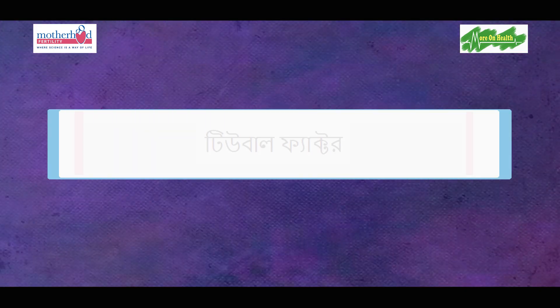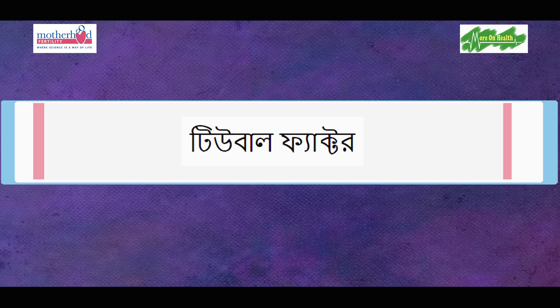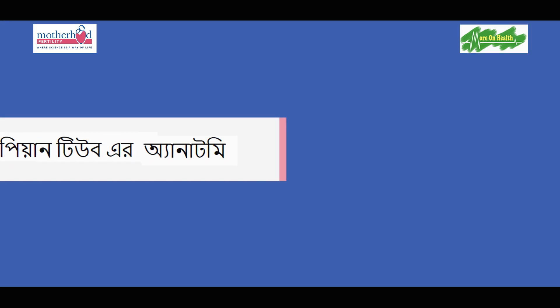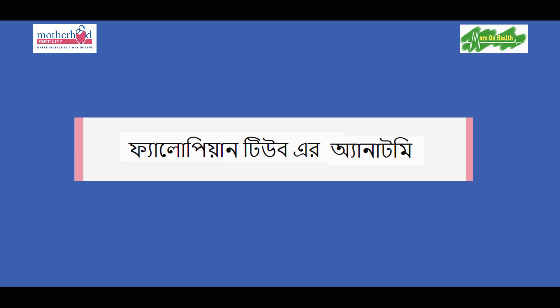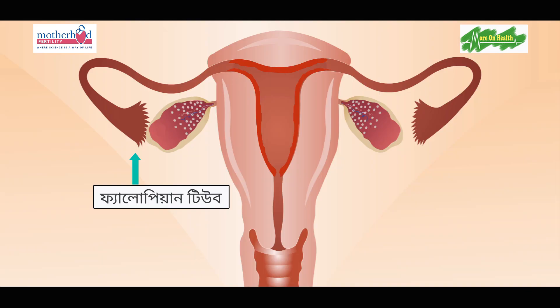First, let us talk about fallopian tubes. These fallopian tubes are approximately 12-15 cm long. The fallopian tube is a very important organ.